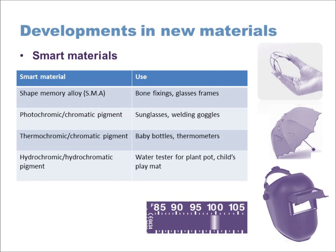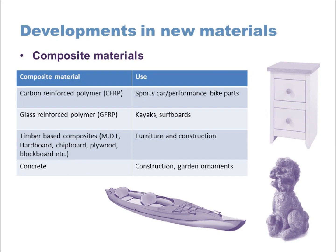The last smart material is hydrochromic or hydrochromic pigment. 'Hydro' relates to water or moisture, and the material changes when it gets wet. Applications include plant pot testers that show when a plant needs watering, and children's play mats where you paint with water — when the water evaporates, the mat can be painted on again. It's also applied to umbrellas, which reveal a design or change color in the rain.